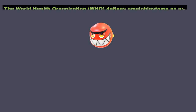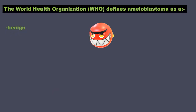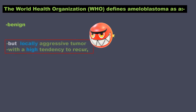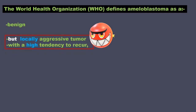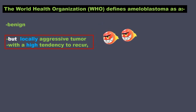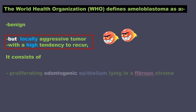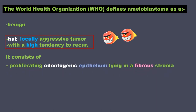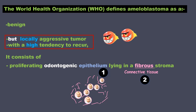The World Health Organization defines ameloblastoma as a benign — it doesn't metastasize to other organs — but locally aggressive tumor with a high tendency to recur. It is called aggressive because it keeps coming back even after removal. It consists of proliferating odontogenic epithelium lying in a fibrous stroma, with two components: epithelial cells and the connective tissue supporting them.